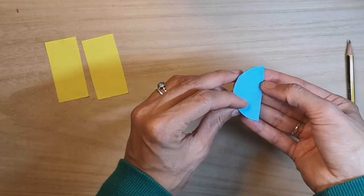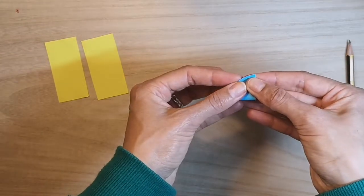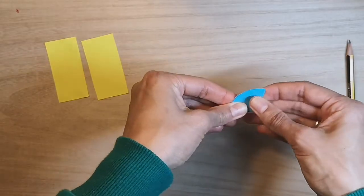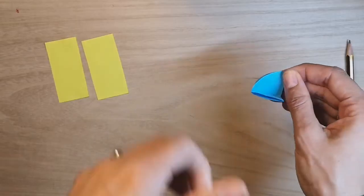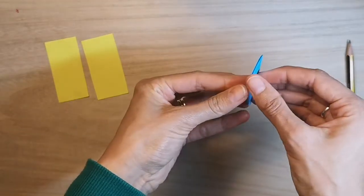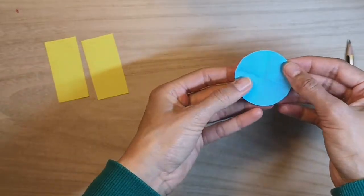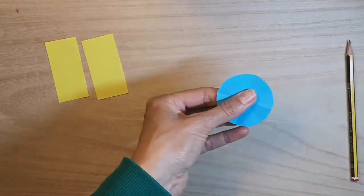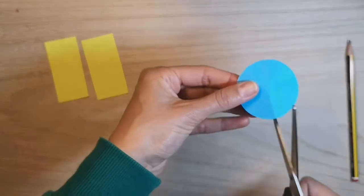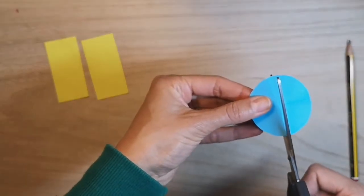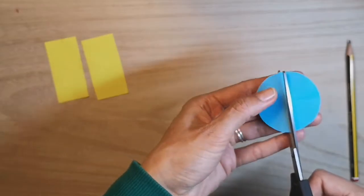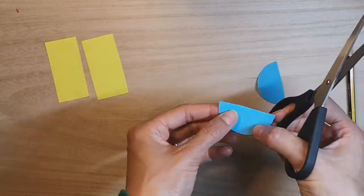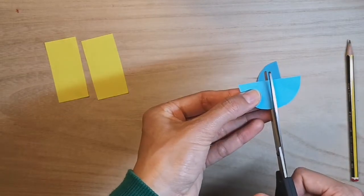But then I'm going to fold that in half again. When I open that up I've now got one quarter, two quarters, three quarters, four quarters. When I cut these out, it gives me a completely new shape.